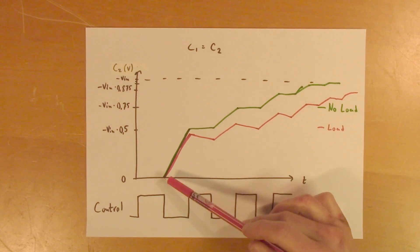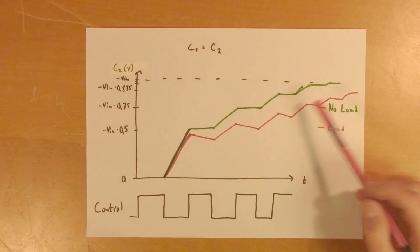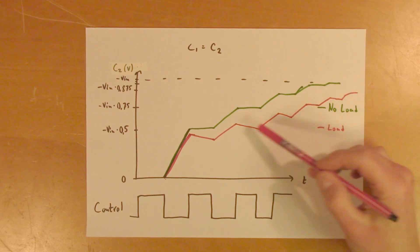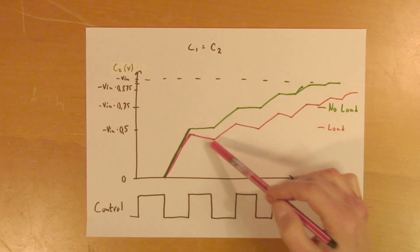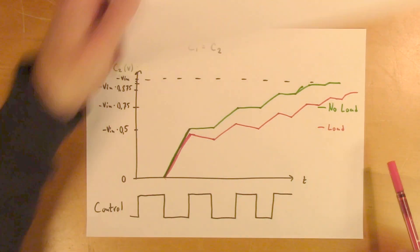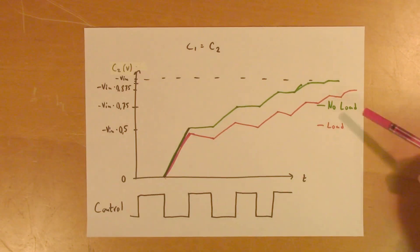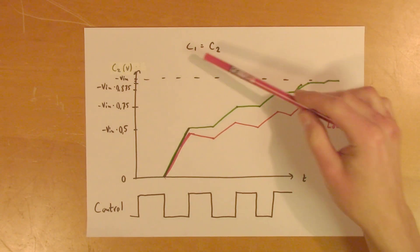So it will take a little longer to charge while you draw current from C2. So you can see that when the voltage stabilizes to minus Vin, there will still be some current draw during the idle part of the period. So there will be some ripple on Vout.